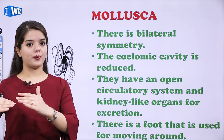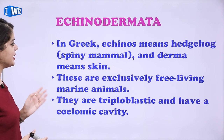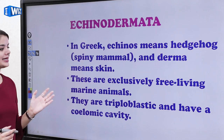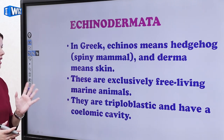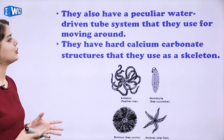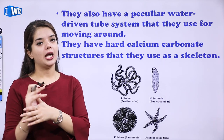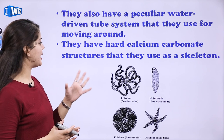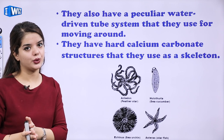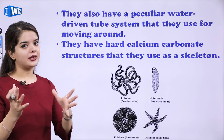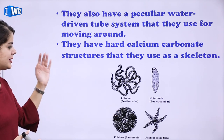Then we have Echinodermata. In Greek, echinos means hedgehog or spiny mammal, and derma means skin. These are exclusively free-living marine animals. They are triploblastic and have a coelomic cavity. They also have a peculiar water-driven tube system that they use for moving around, and hard calcium carbonate structures used as a skeleton. Examples are sea cucumber, starfish, and feather star.